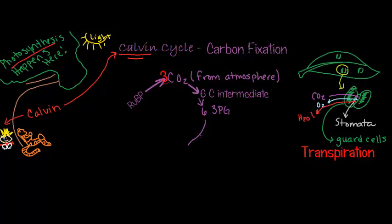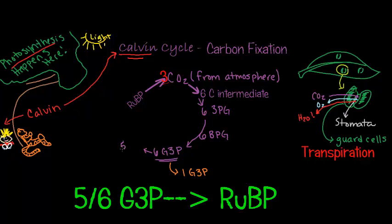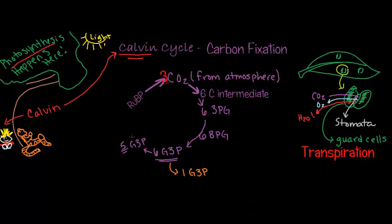3PG is then reduced by ATP to produce six BPGs. This is then going to be reduced and it will then form G3P, which is also called PGAL. I'm not going to get into all the different terminologies. The G3P, only one of those is going to be pulled out of this cycle and used to create something else such as glucose. The other five molecules of G3P, so five sixths of them, are going to go to help regenerate RUBP and continue the cycle.